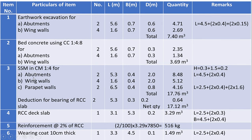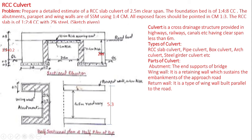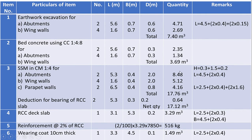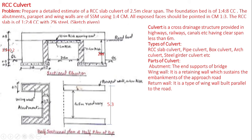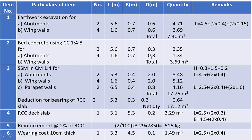Item number three: size stone masonry in cement mortar 1:4 for abutments, wing walls, and parapet walls. Even though abutments and wing walls are built monolithic, they are considered separately for extracting dimensions from the sketch. For the abutment, length equals width of roadway (4.5 meters) plus thickness of wing wall at both sides (2 × 0.4 meters). Height of abutment equals depth below ground level (0.3 m) plus height below deck slab (1.5 m) plus thickness of deck slab (0.2 m), totaling 2 meters. Quantity of masonry for abutment is 8.48 cubic meters.